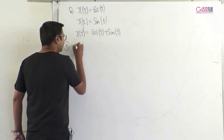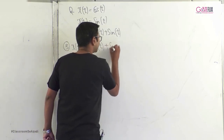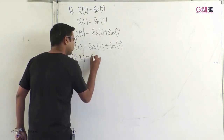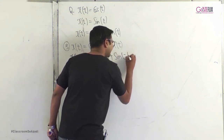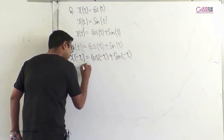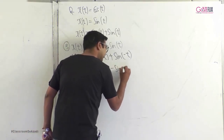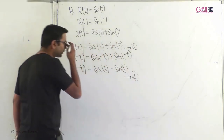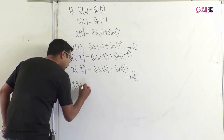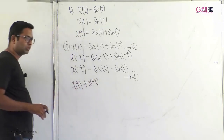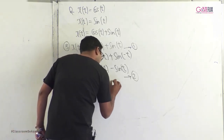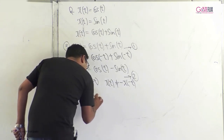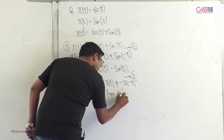Third example: x(t) = cos(t) + sin(t). We find x(−t) = cos(t) − sin(t). Since x(t) ≠ x(−t) and x(t) ≠ −x(−t), this signal is neither even nor odd.